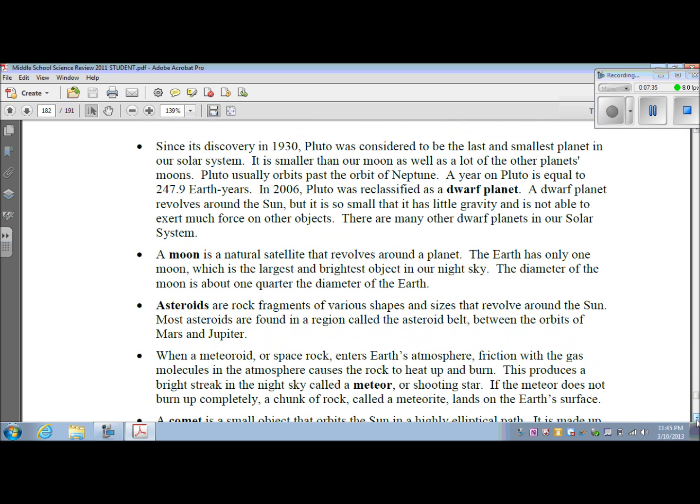Pluto. Since its discovery in 1930, Pluto was considered to be the last and smallest planet in our solar system. It is smaller than our moon as well as a lot of other planet moons. Pluto usually orbits past the orbit of Neptune. A year on Pluto is equal to 247.9 Earth years. In 2006, Pluto was reclassified as a dwarf planet. A dwarf planet revolves around the Sun, but it is so small that it has little gravity and is not able to exert much force on other objects. There are many other dwarf planets in our solar system.